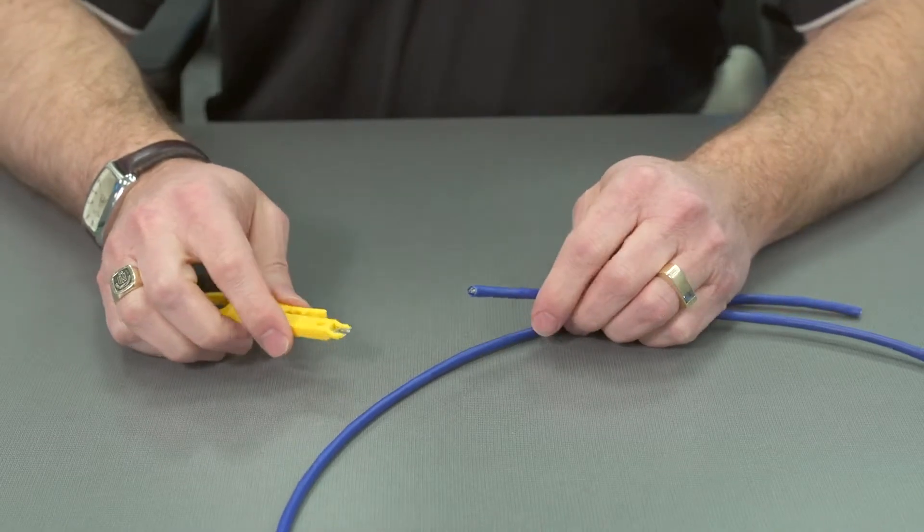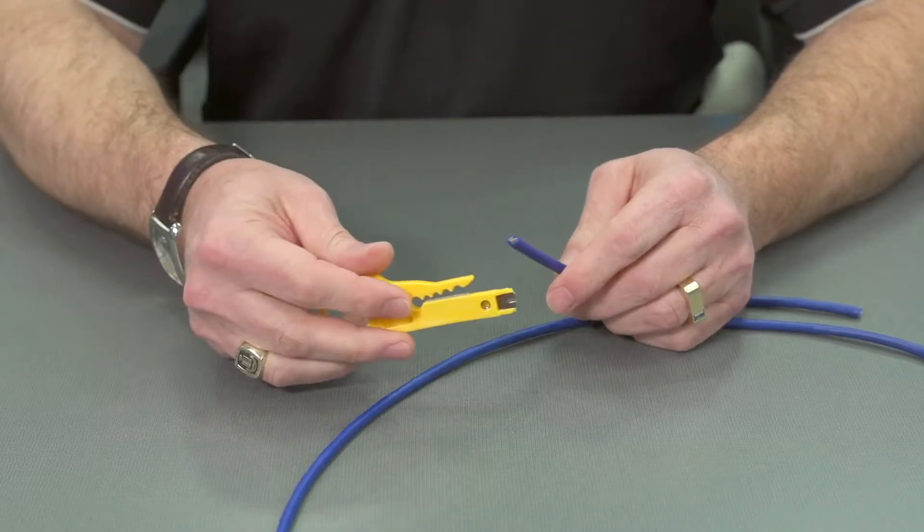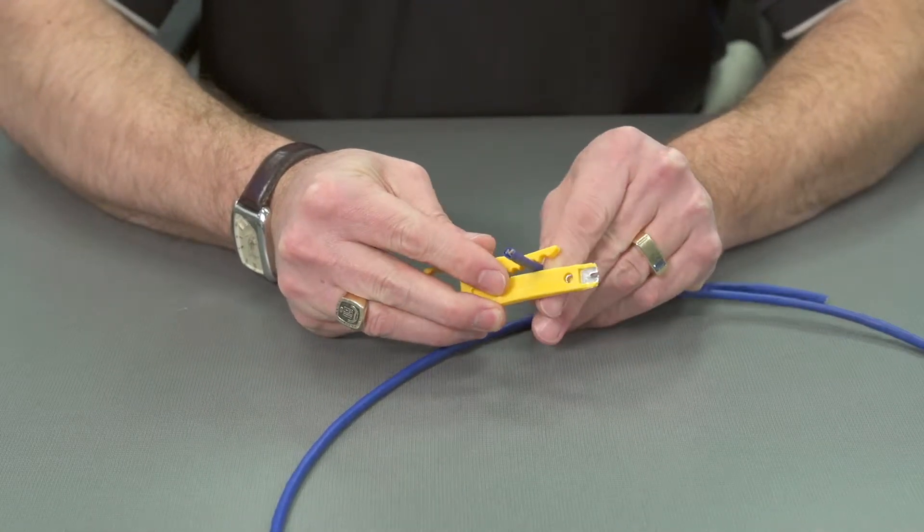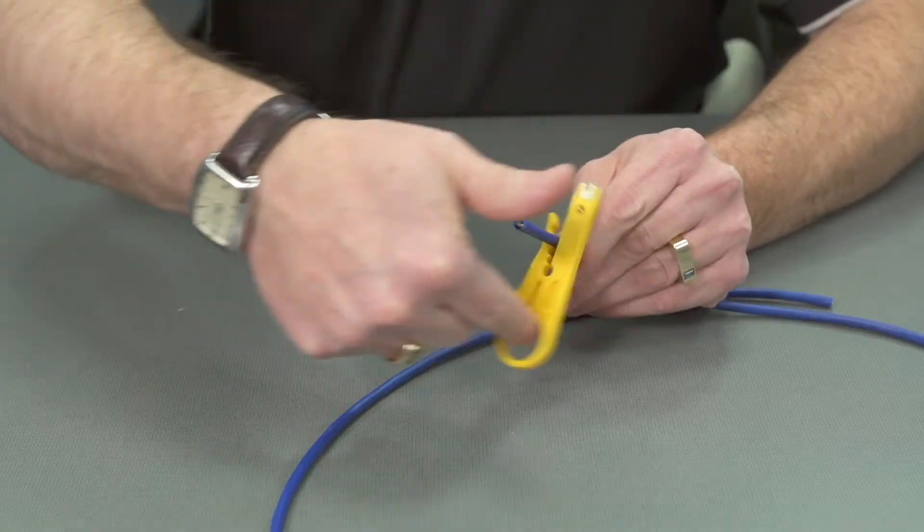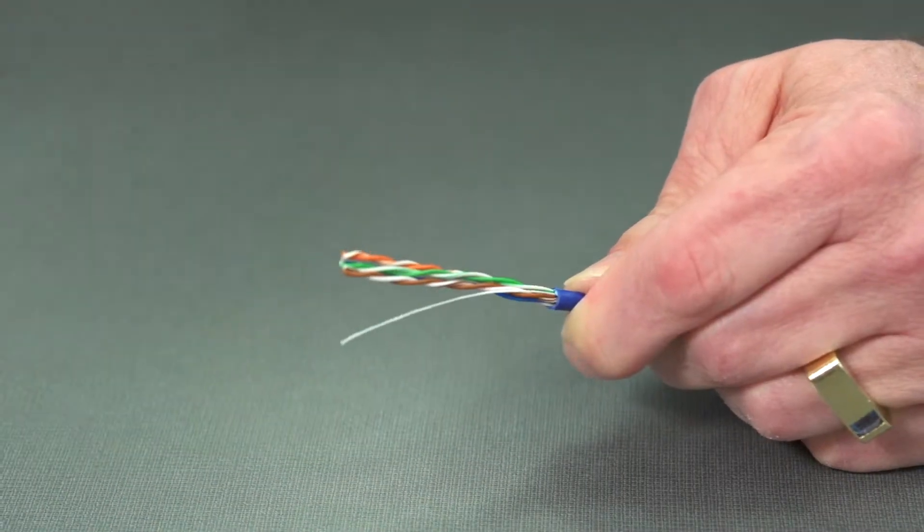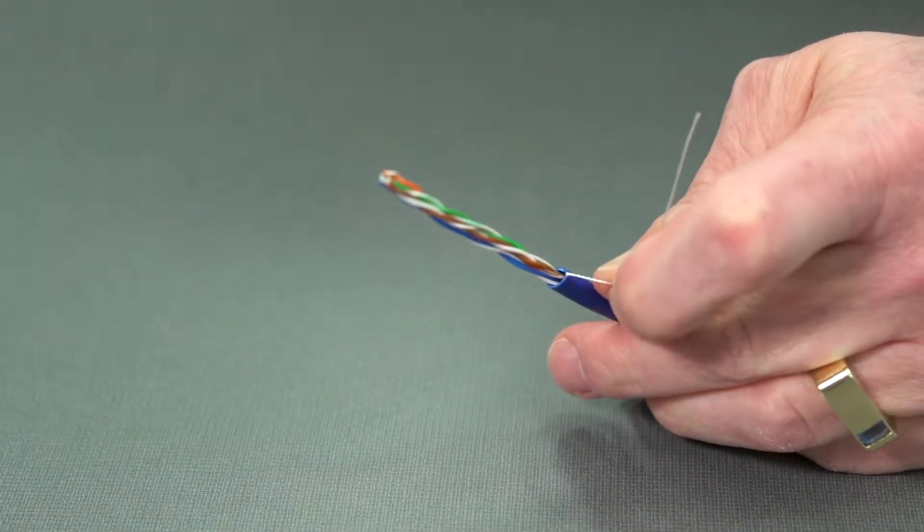So we're going to cut the jacket off this cable. Now we take our tool, it has a small razor blade inside here. We're going to move it into the second slot and do one turn around. Take it out. You can pull the jacket off. There's a pull string in here. We want to cut that off.